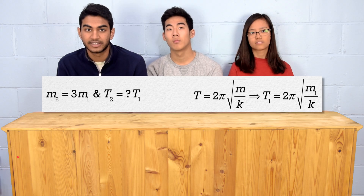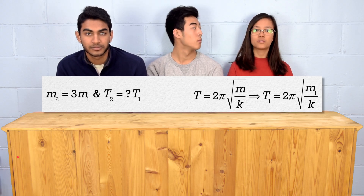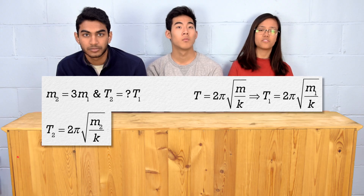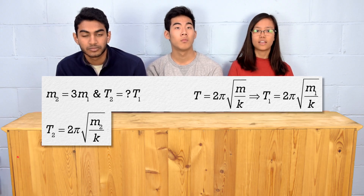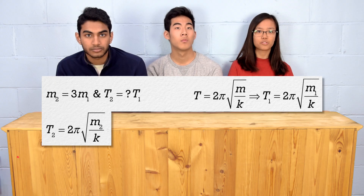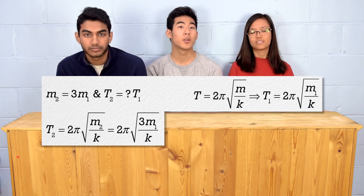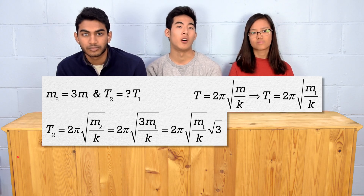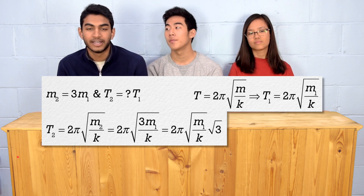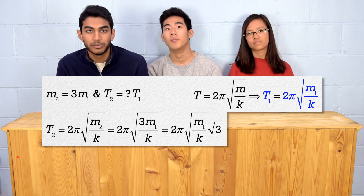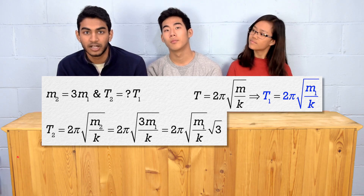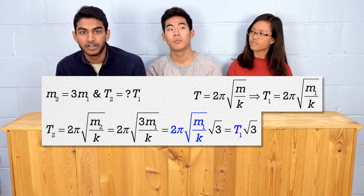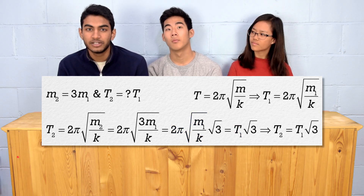But I don't know what to do next. Well, you know period 2 equals 2π times the square root of mass 2 divided by the spring constant. And you can substitute 3 times mass 1 in for mass 2, and you can isolate the square root of 3 in the equation to make it 2π times the square root of mass 1 divided by the spring constant, all multiplied by the square root of 3. Oh, I get it. Period 1 equals 2π times the square root of mass 1 divided by the spring constant, so we can substitute period 1 into the equation, and we have our answer. Period 2 equals period 1 multiplied by the square root of 3.